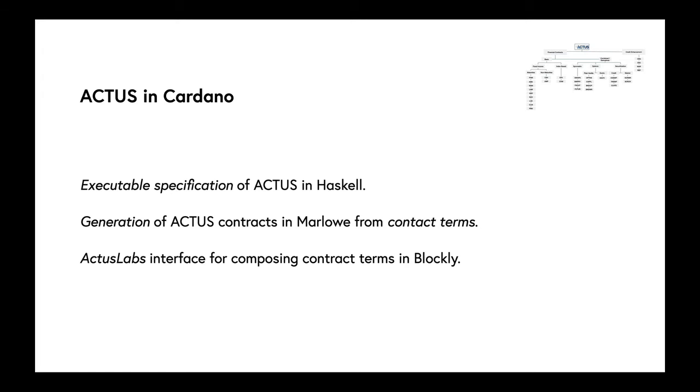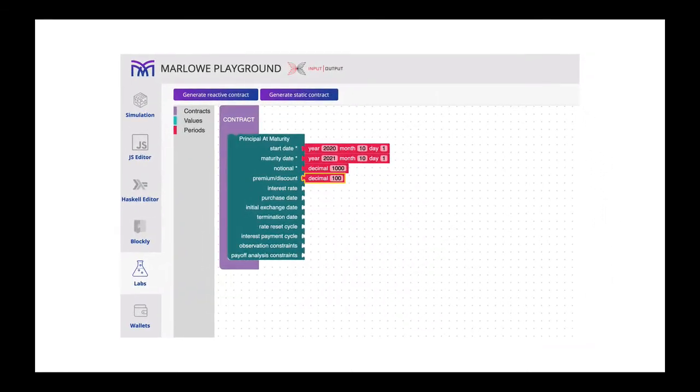We're also able to generate contracts using this executable spec. You can generate particular Marlowe contracts, particular ACTUS contracts from the terms of those contracts. We have a user interface, which we call ACTUS Labs interface, for composing contract terms using a visual interface. Here's a snapshot. You can see it offers you a menu of contract terms, start date, maturity date, notional amount.